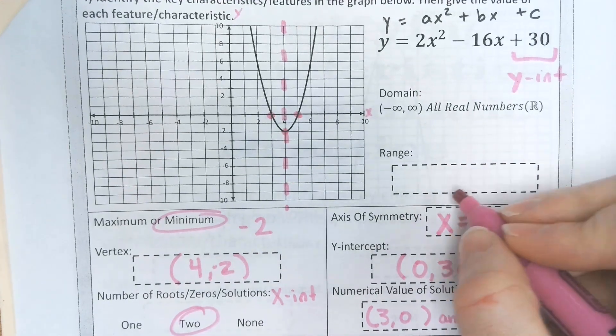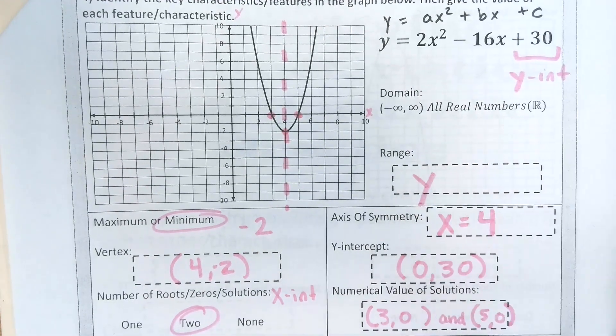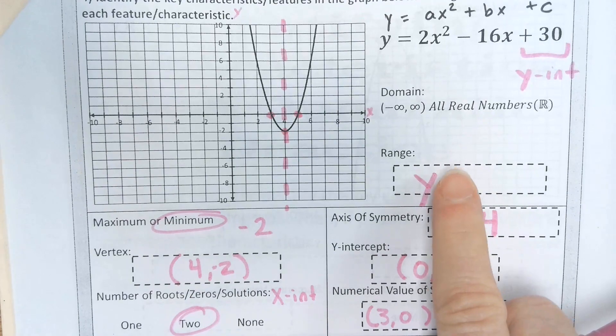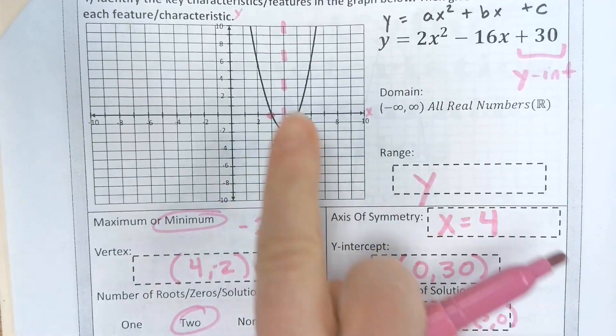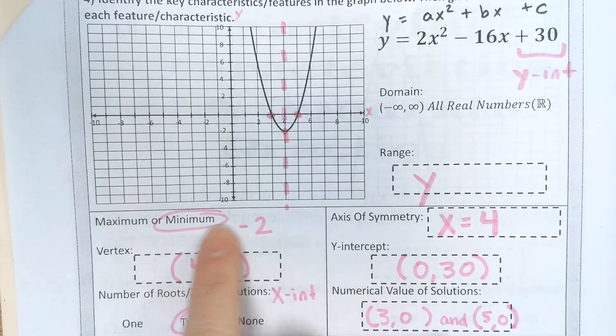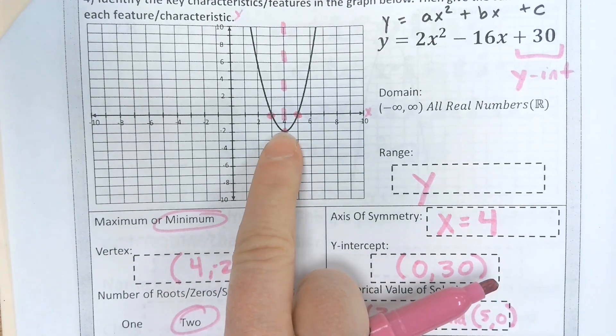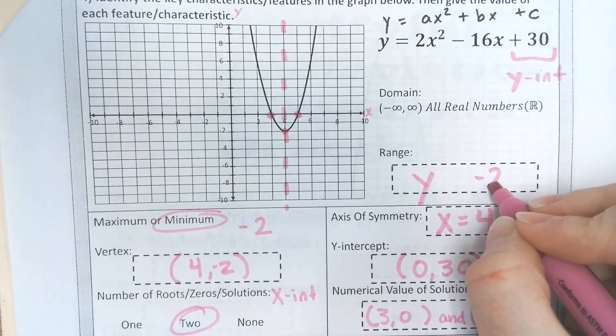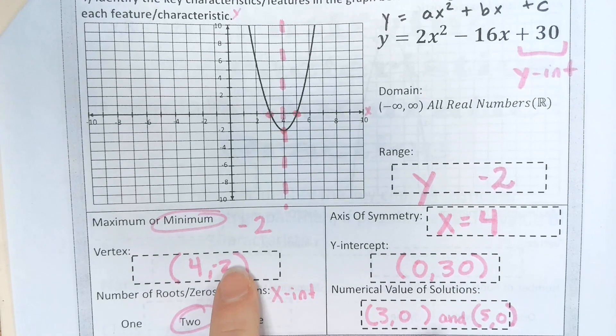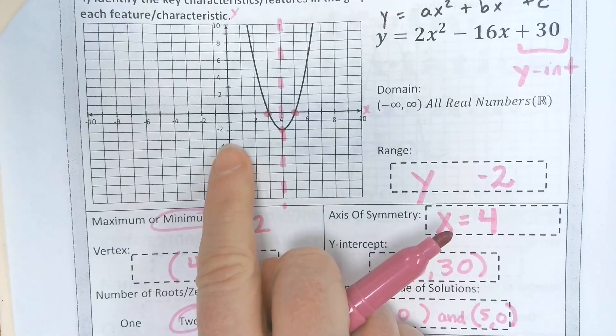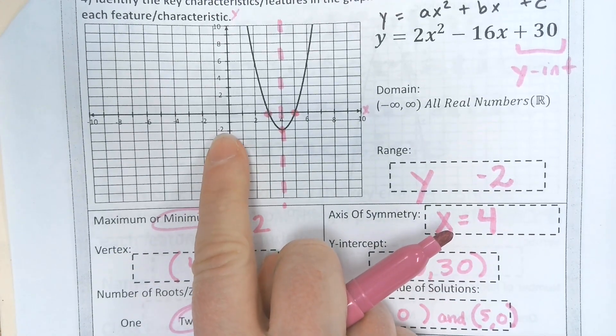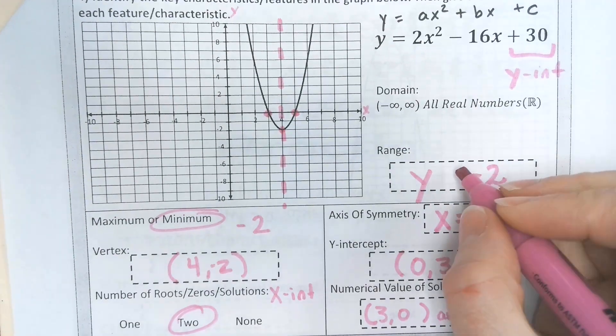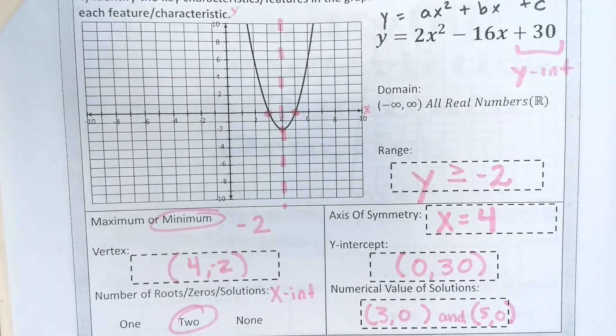The range, the range is your y value, so we start with y. We are going to look at how low does it go, which actually refers back to your minimum. It goes down to negative 2. If it's a minimum, then it is at negative 2 or greater. So we're going to say greater than or equal to negative 2.